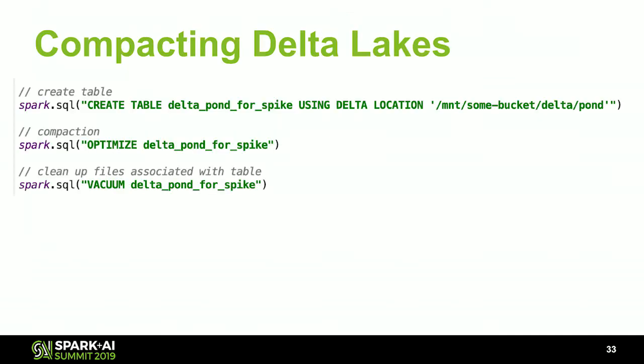Now we can chat about Delta and some of the operations it provides for compaction. We'll use a command to create a delta table. Delta only offers a SQL API, so you need to run these as SQL commands. You can then run the OPTIMIZE command to compact a delta pond. I've done this on some sample data and it didn't really do anything — I don't fully understand how optimize works and couldn't figure it out from the documentation, so that's something I'll need to look into.